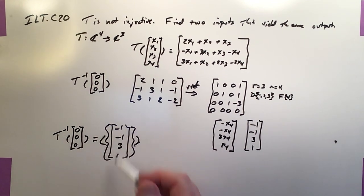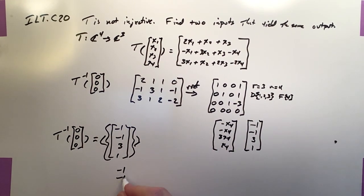So I'm going to pick one of them, which is just 1 times it. Negative 1, negative 1, 3, 1. And a second one would be negative 1 times it. 1, 1, negative 3, negative 1.